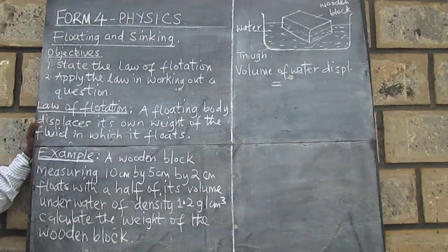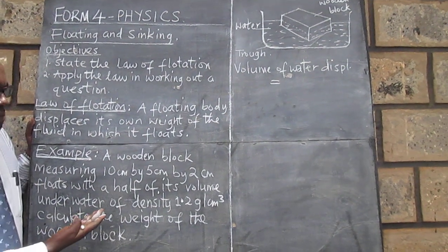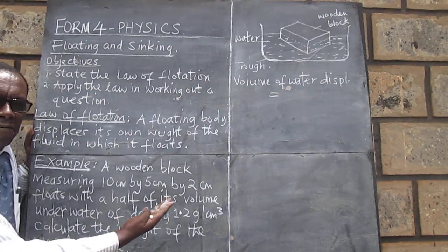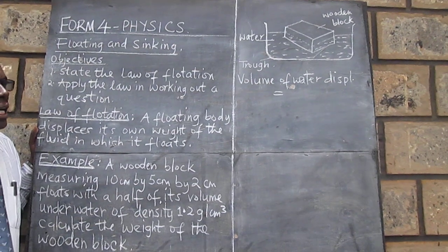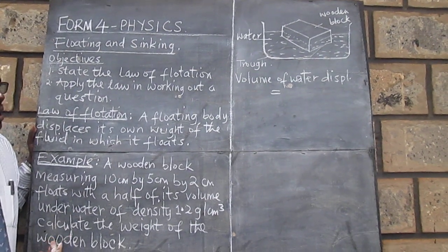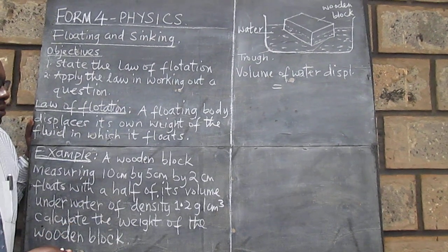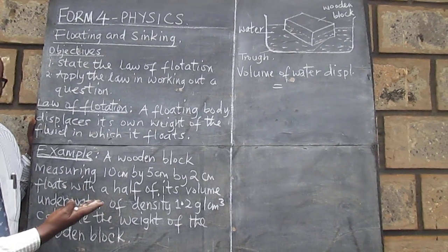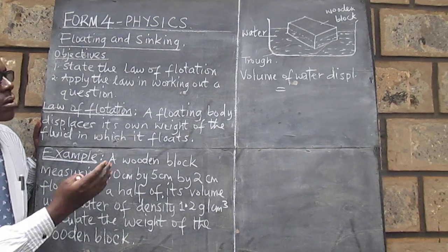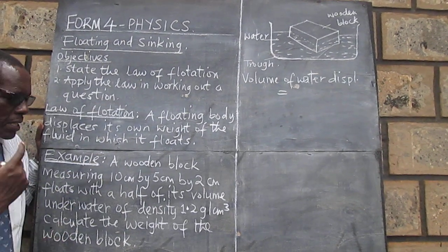And the question states clearly that the object floats with a half of its volume under the water. Therefore, we need to get the volume of the block and then divide by 2 so that we get the volume of liquid that is displaced.